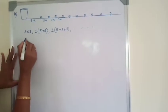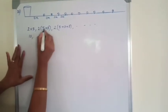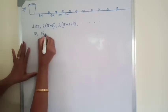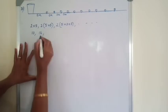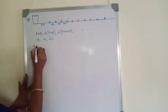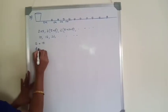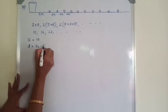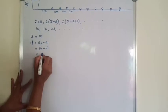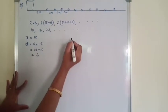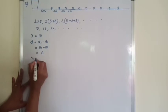So we write the AP: 2 × 5 = 10, 2 × 8 = 16. Again 5 + 3 = 8, 8 + 3 = 11, 2 × 11 = 22. So A equals 10. D equals A₂ minus A₁ = 16 minus 10 = 6. There are 10 potatoes, so N equals 10.